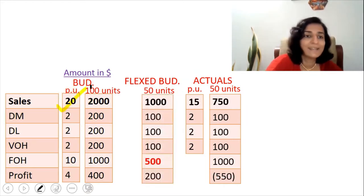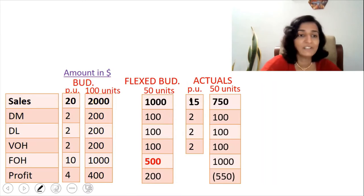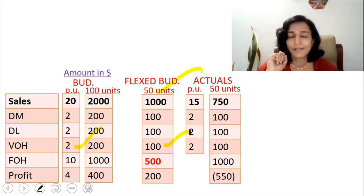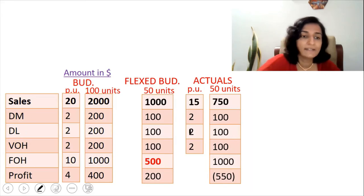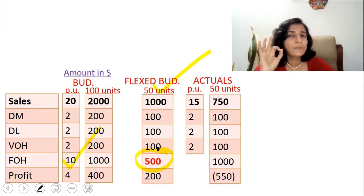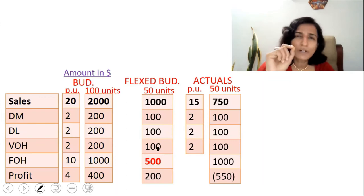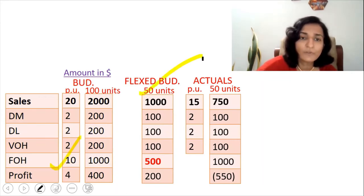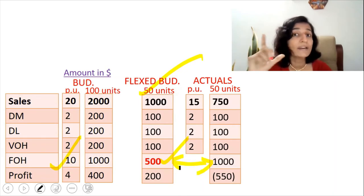The flexed budget figures are: sales value $20 × 50 = $1,000; direct material $2 × 50 = $100; direct labor $2 × 50 = $100; variable overheads $2 × 50 = $100. Please note that fixed overheads will also be flexed in absorption costing — we take $10 × 50 units, so the fixed overheads will be budgeted at only $500. This is the peculiarity of absorption costing: we flex the fixed overheads as well. The difference that arises is nothing but the fixed overhead volume variance.